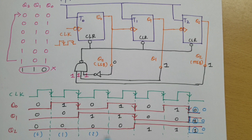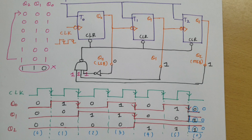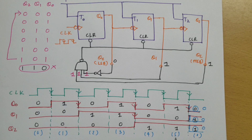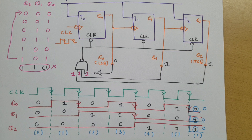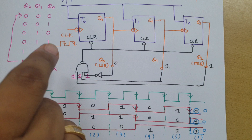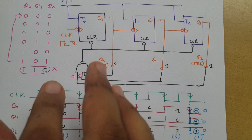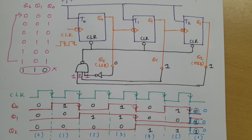Observing all the states — 0, 1, 2, 3, 4, 5, then back to 0 — the counter counts from 0 to 5, giving six total states, confirming this is a modulo-6 counter. Instead of T flip-flops, JK flip-flops can also be used by shorting the J and K terminals, which also produces toggle behavior. This is how we design a modulo-6 counter using an asynchronous counter.